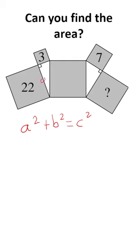But actually, if we label this length a and this length b, because these are all squares, 22 is a squared.